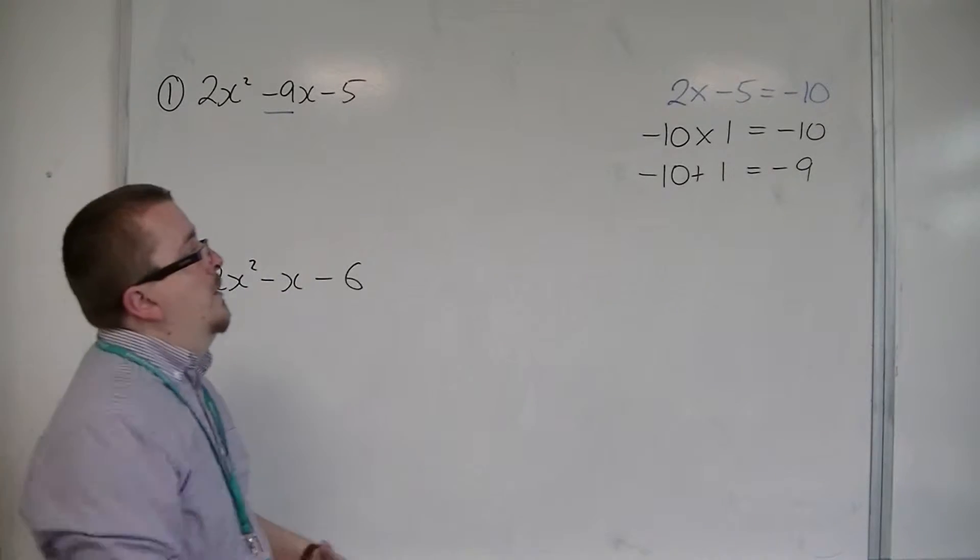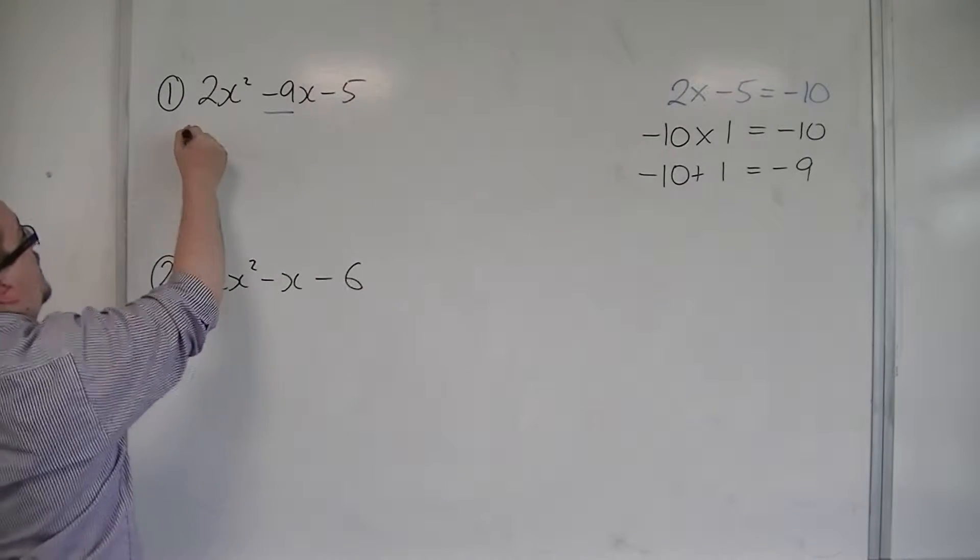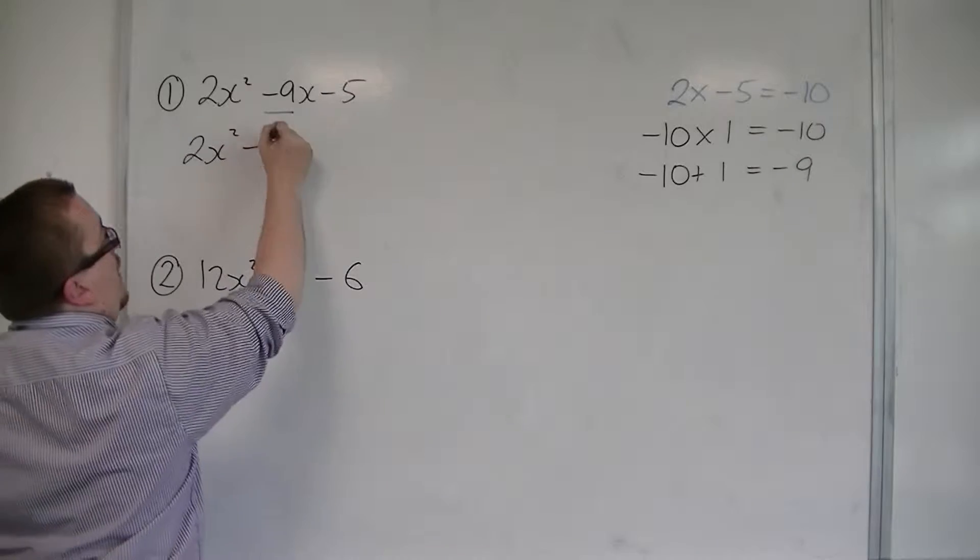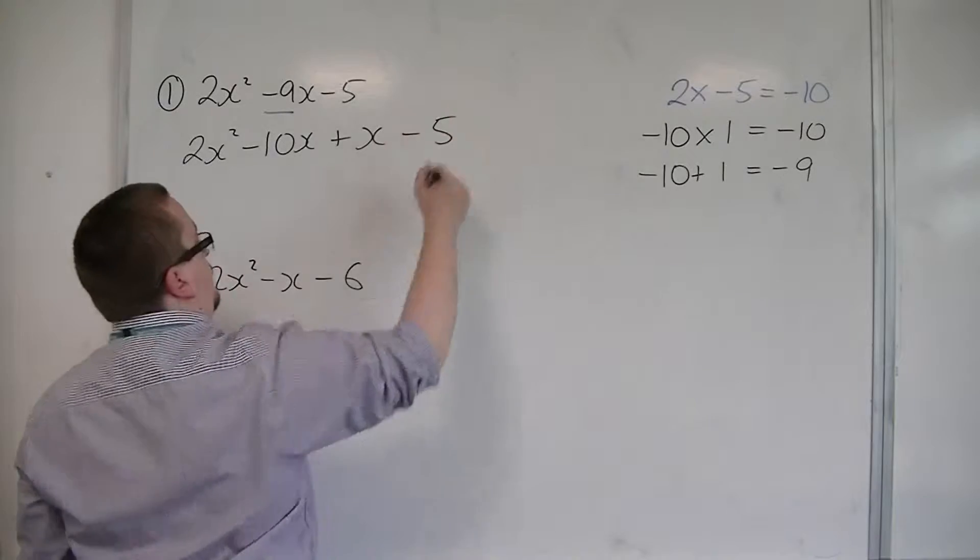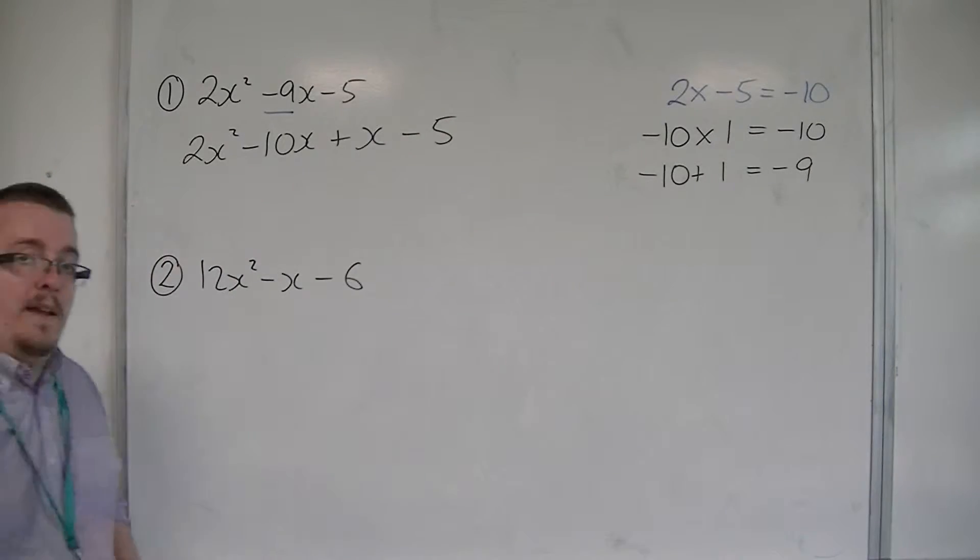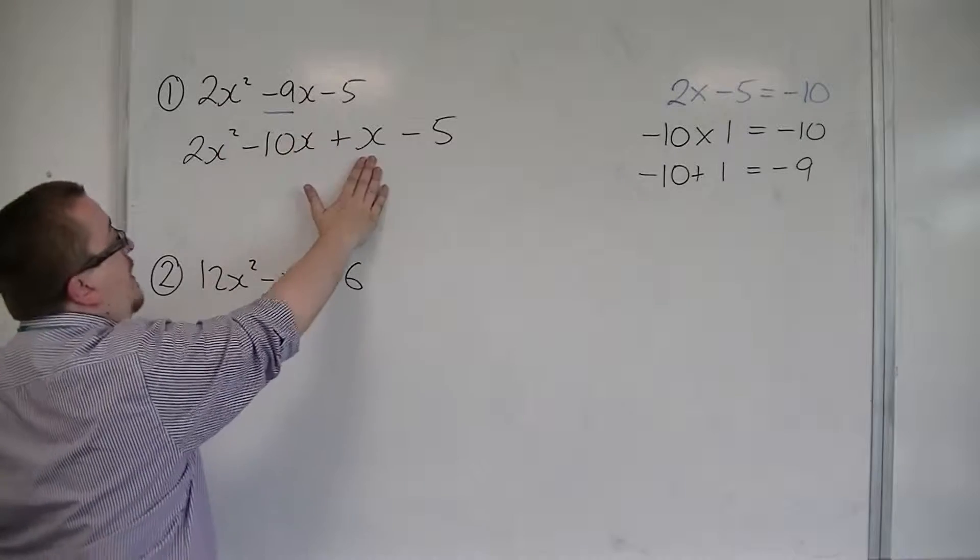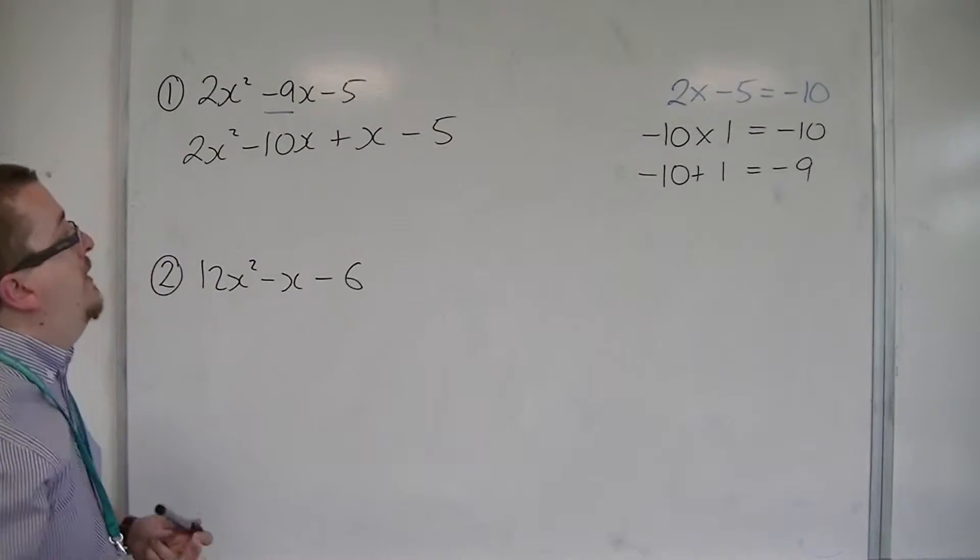And so when we have this minus 10 and this 1, what that means is that I can split the minus 9x into minus 10x and 1x or just x. Now it doesn't matter which way round you write these. You could write plus x minus 10x. It doesn't matter. The next step will be the same.